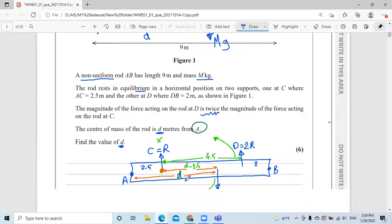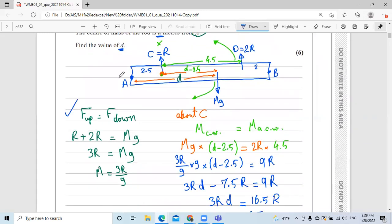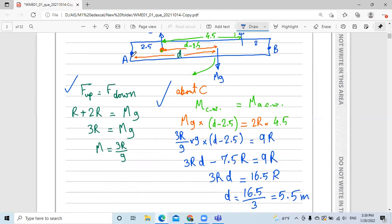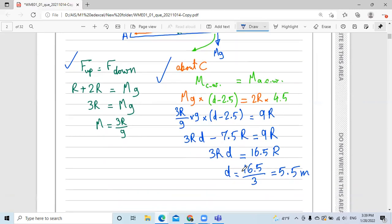And we use the two formulas that we have: forces up equal forces down, and moment clockwise equal moment anticlockwise. And we choose the point C or any other points. And we substitute the values to get how far is the center of mass from point A, which is 5.5 meters. That's it.